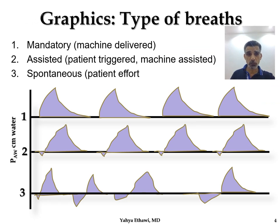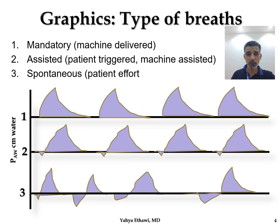There are three types of pressure waves. In the first line, we have beautiful waves with a good rising time, a short plateau, and a descending time — indicating good airway behavior. There is a pause between breaths, and they are all the same shape, so I know this is a mandatory breath provided by the ventilator.